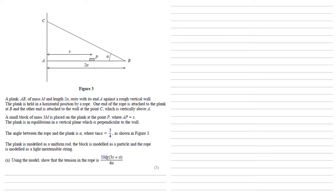The angle between the rope and the plank is alpha, where tan alpha equals three quarters, as shown in figure 3. The plank is modeled as a uniform rod, the block is modeled as a particle, and the rope is modeled as a light inextensible string. Using the model, we want to show that the tension in the rope is 5MG brackets 3X plus A all over 6A.